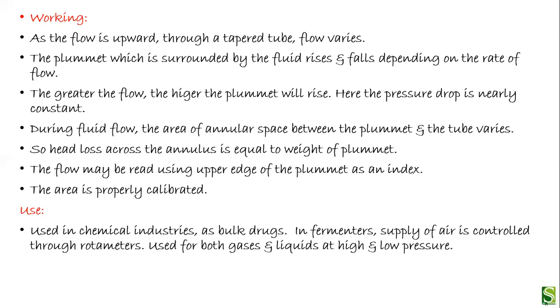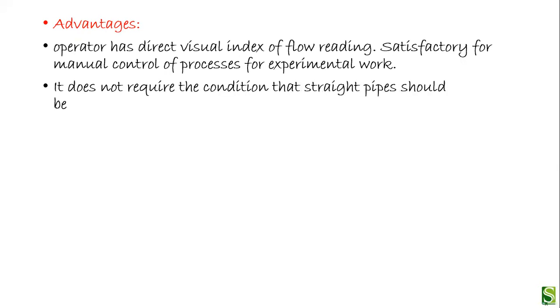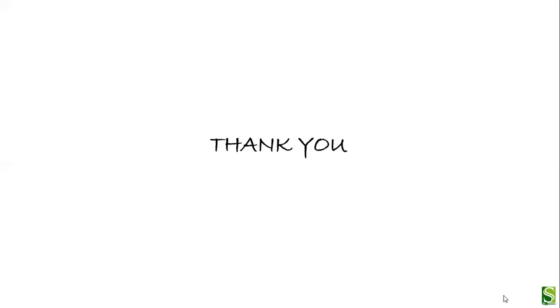The rotameter is used in chemical industries for bulk drugs. In fermenters, the supply of air is controlled through rotameters. It is used for both gases and liquids at high and low pressures. The advantage is that the operator has a direct visual index of the flow reading. It is satisfactory for manual control of processes and experimental work. It does not require the condition that a straight pipe should run before or after the flow meter. This was all about the equipment used for measuring the flow of any fluid.